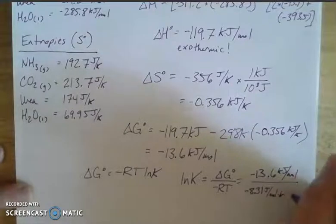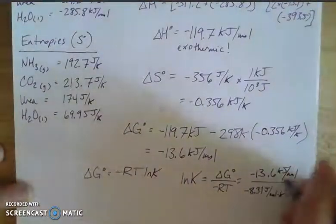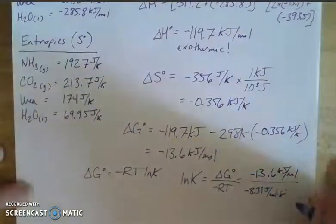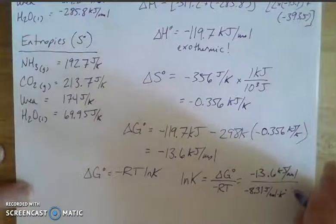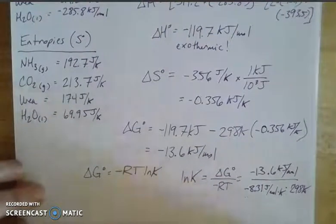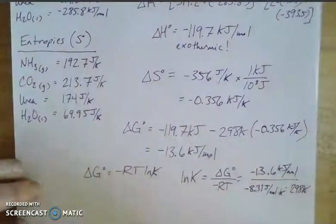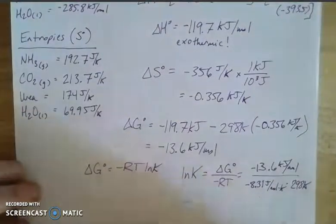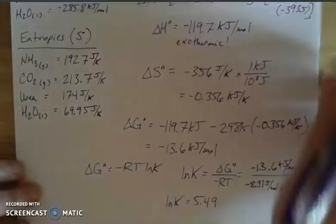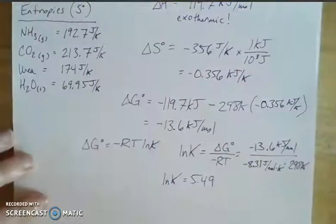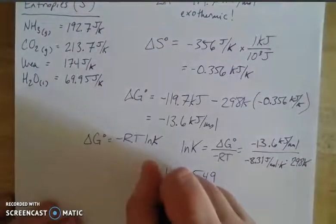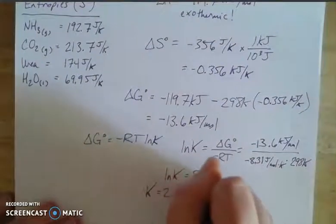We're going to have to do some rearrangement here, because we have our R in joules and we have this in kilojoules. So of course, we can do some conversion. We're snappy with the metric system now. So when we rearrange and get these guys in the same units, then we end up with a natural log of K that's equal to 5.49. And we know to undo a natural log, we need to take e to the x. And so when I take e to the x, I end up with a K that's equal to 2.4 times 10 to the second.